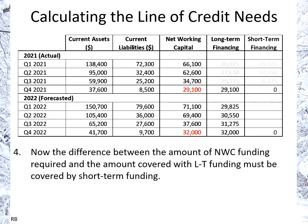Now we can figure out the short-term financing, which is basically whatever is left over that needs to be financed. For Q1, $71,100 minus $29,825 gives us $41,275 in short-term financing. We do the same for Q2: $69,400 minus $30,550. And for Q3 the same approach. Q4 ends up with zero short-term financing, because that's how we've planned it.